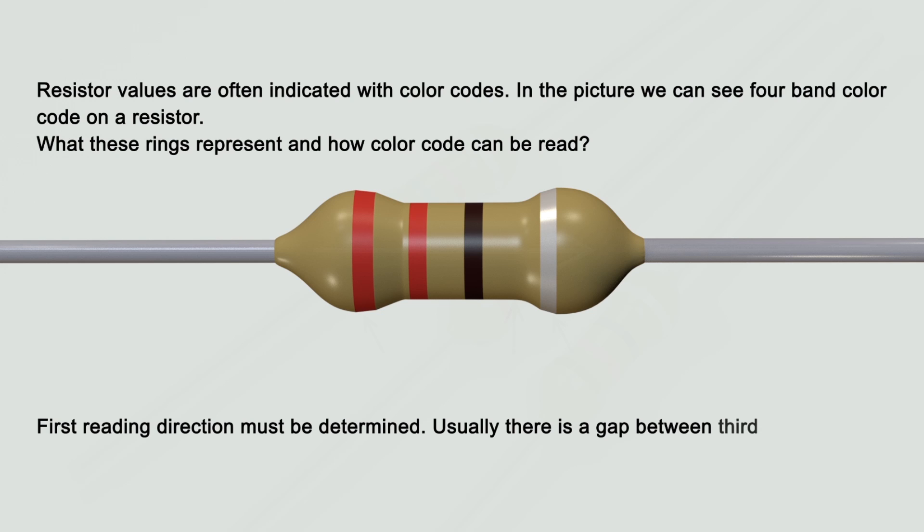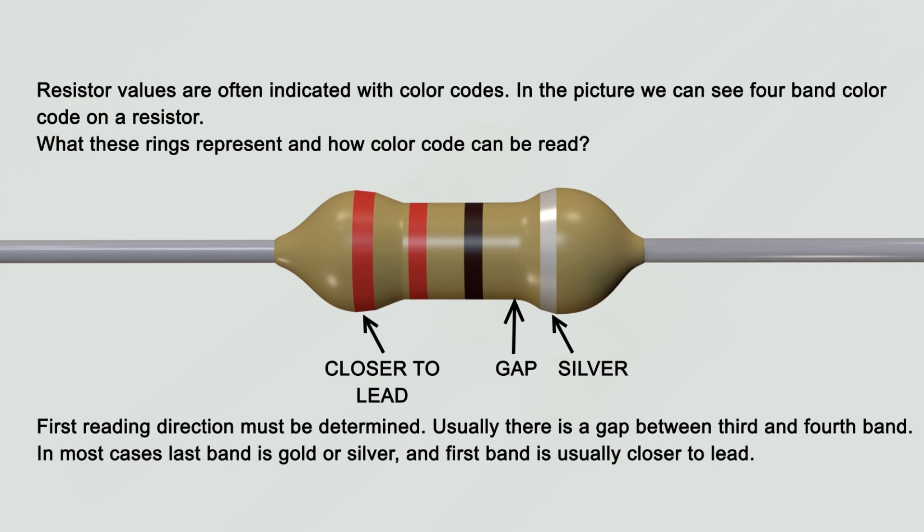First reading direction must be determined. Usually there is a gap between third and fourth band. In most cases last band is gold or silver, and first band is usually closer to lead.